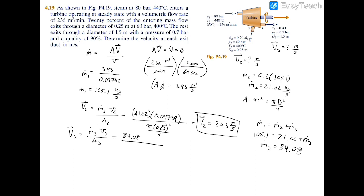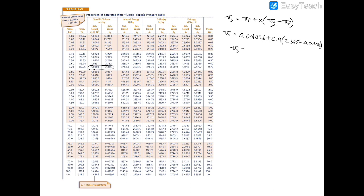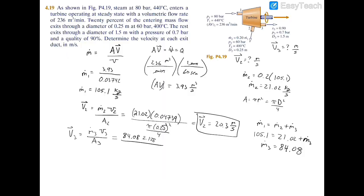At exit three, we're given a quality of 0.9 at 0.7 bar, meaning we're in the saturated mixture region, closer to saturated vapor. Using the formula: v3 equals v_f plus quality times (v_g minus v_f). At 0.7 bar, that gives 0.001036 plus 0.9 times (2.365 minus 0.001036), resulting in a specific volume of 2.1286 meters cubed per kilogram.